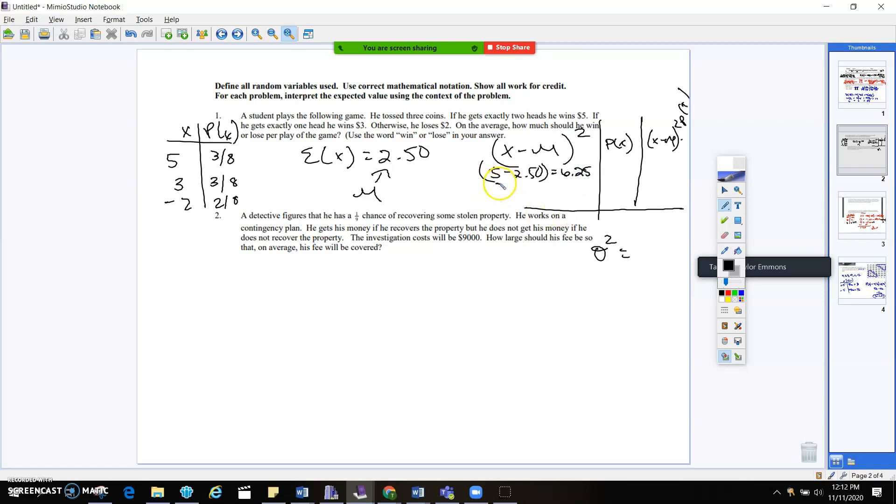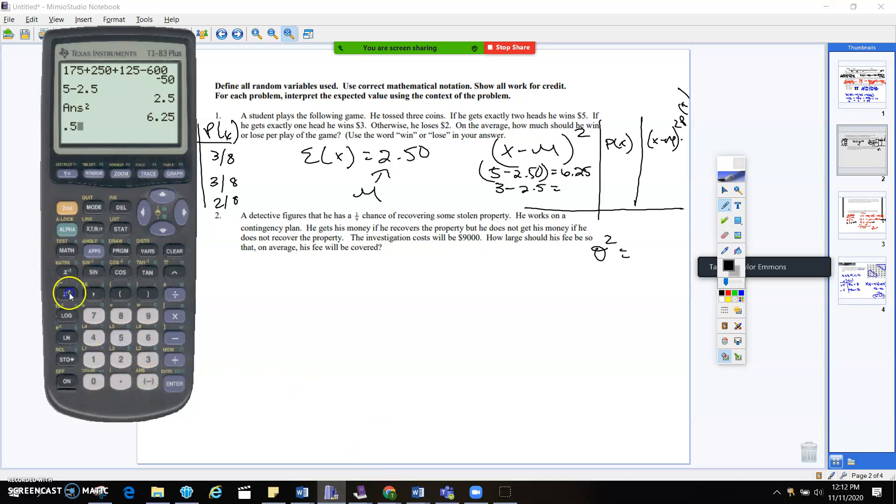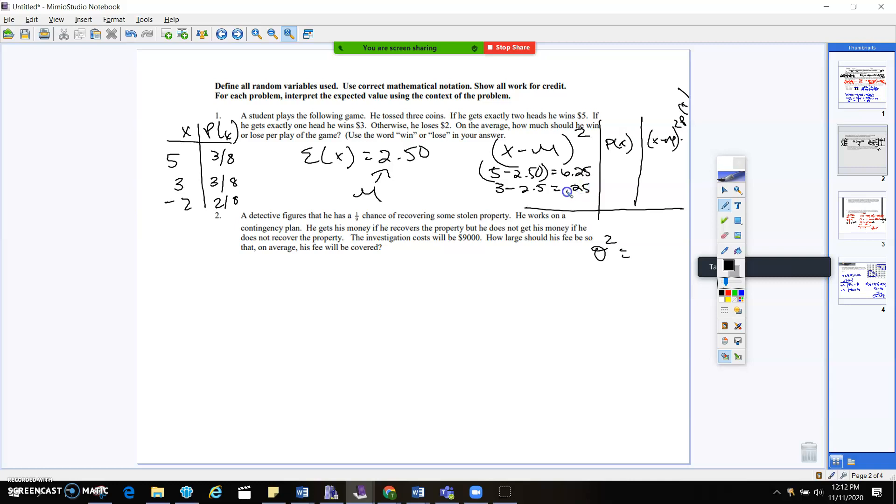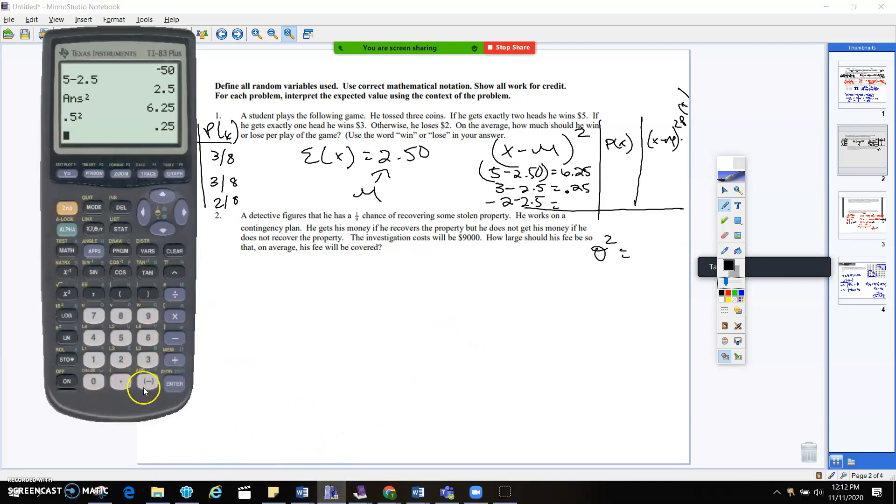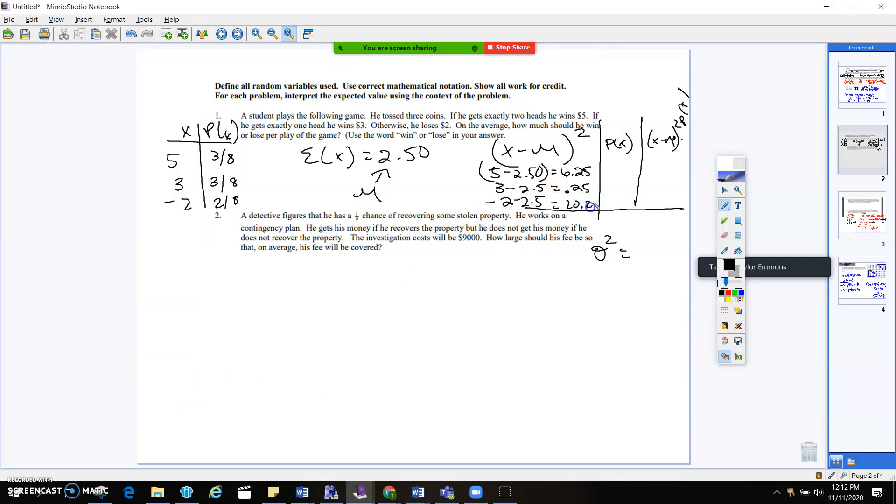Okay, so we're going to take 3 minus 250. That's going to give us 0.5. And 0.5 squared obviously is 0.25. And then we've got negative 2 minus 250, which is going to give us negative 4.5, and then we're going to square it, which is going to be positive 20.25.